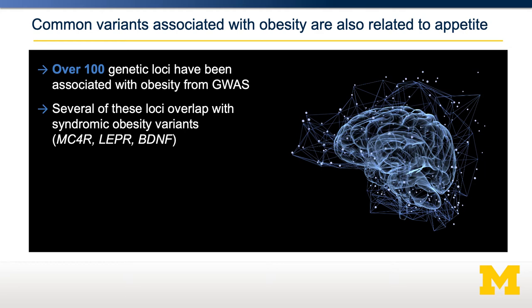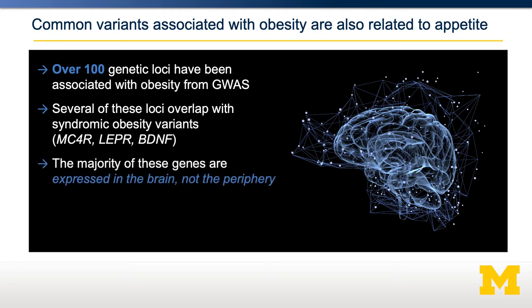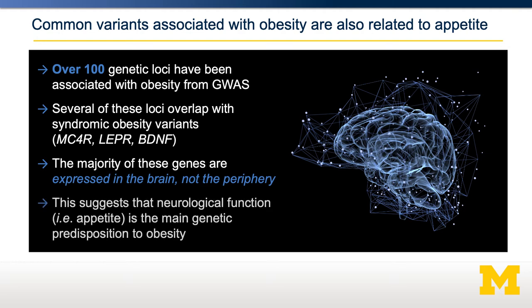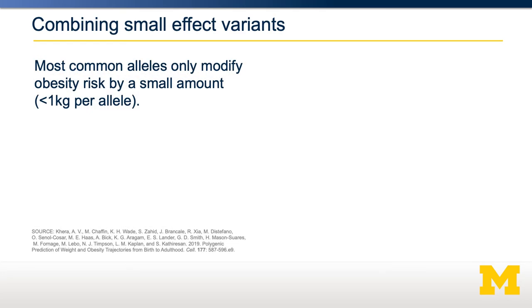More interestingly, the vast majority of genes identified by GWAS are expressed exclusively in the brain and not in the periphery. This again highlights that neurological function — for example, appetite — is critically important to the genetic risk of obesity. Most of these common alleles exist in over five percent of the population.